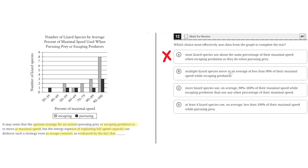Option B: Multiple lizard species move at an average of less than 90% of their maximal speed when escaping predation. This seems to be the right answer because the claim is that although it seems like optimal strategy to move at maximal speed, because of energy expenses they disfavor such a strategy even in escape contexts. So it's suggesting that most species move at less than 100% of their maximal speed. B seems to be the correct answer.